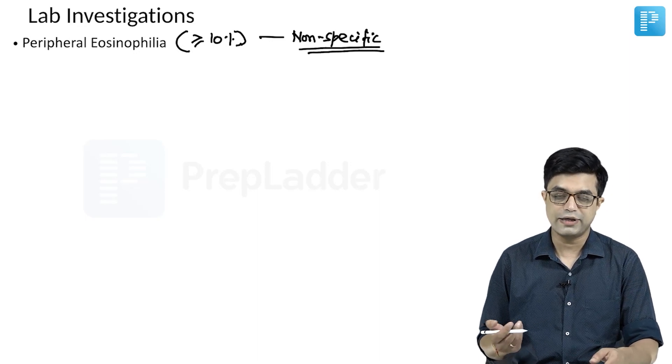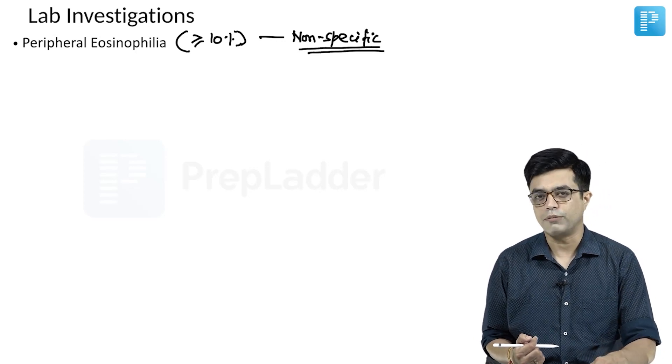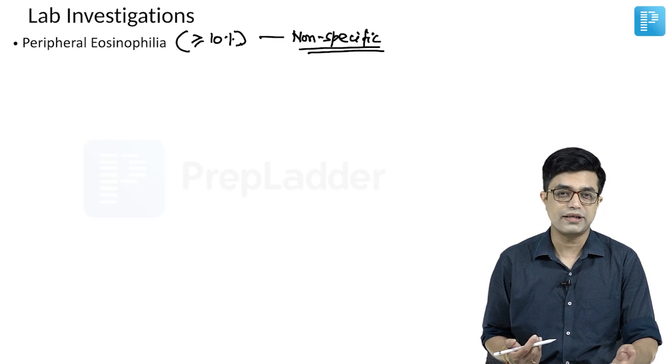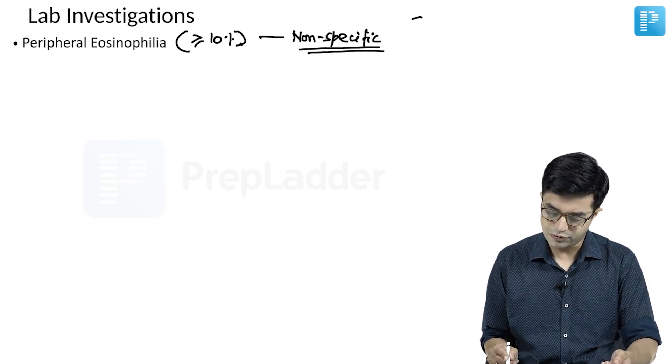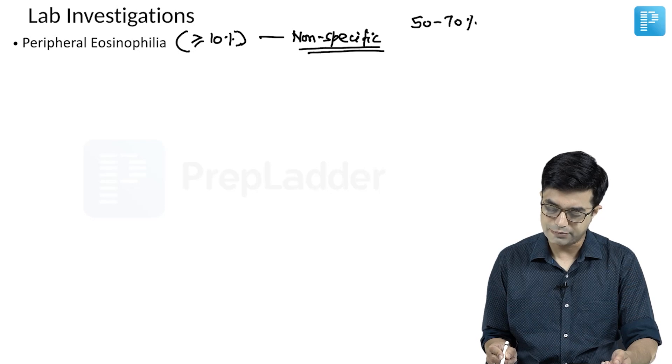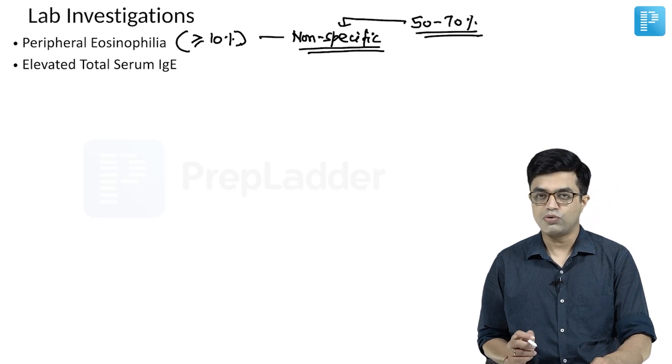Some individuals without esophagitis may have eosinophilia, while patients with severe esophagitis may have normal eosinophil levels. In general, various textbooks say about 50 to 70% of patients will have some degree of peripheral eosinophilia.